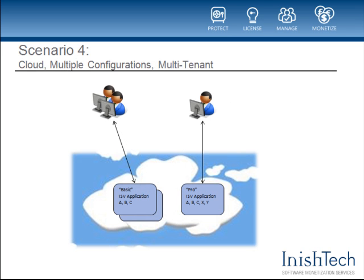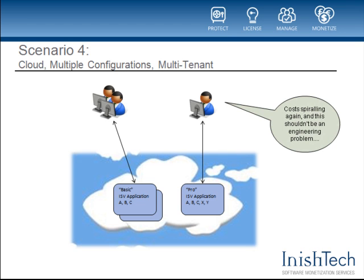The tactical solution would be to compile different versions of your software — one for each distinct service edition that supports different subsets of features. During registration, your tenants could select from the basic, standard, and professional editions of the application. But straight away you can see the problem with this approach: you've used an engineering solution to solve a configuration and packaging problem.